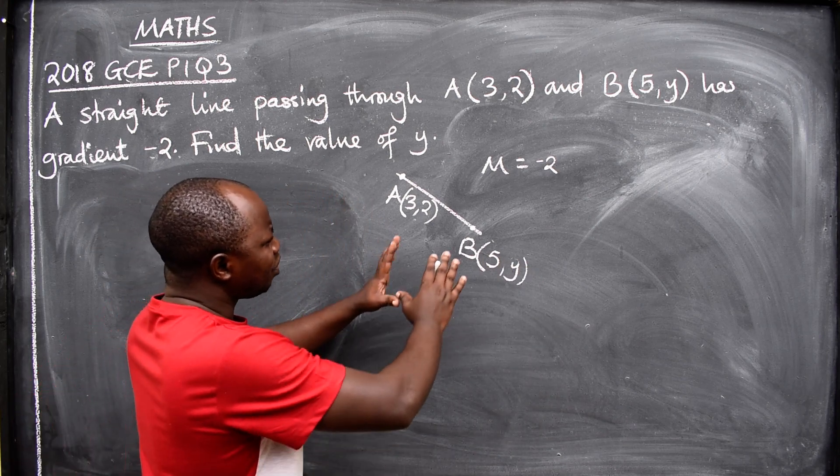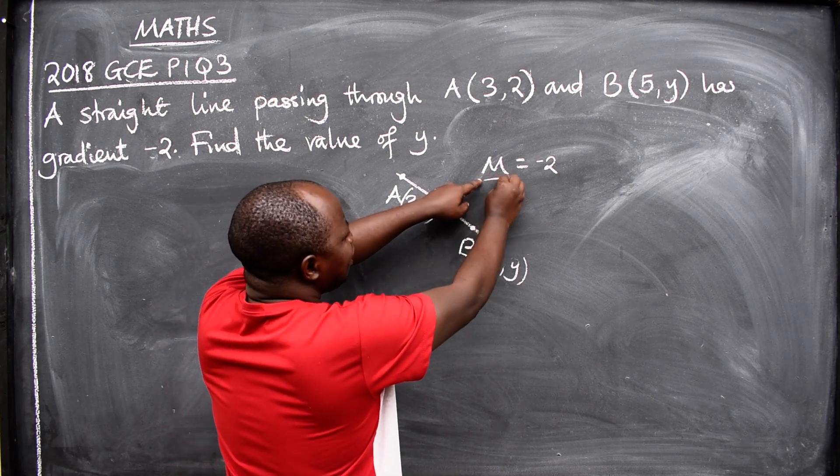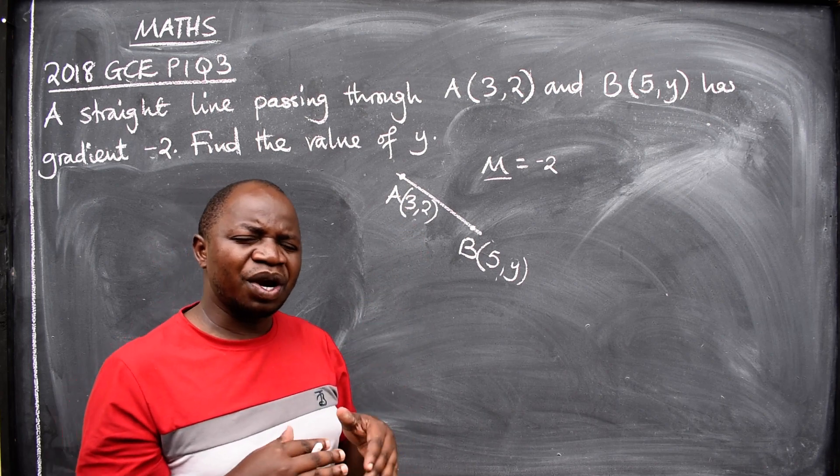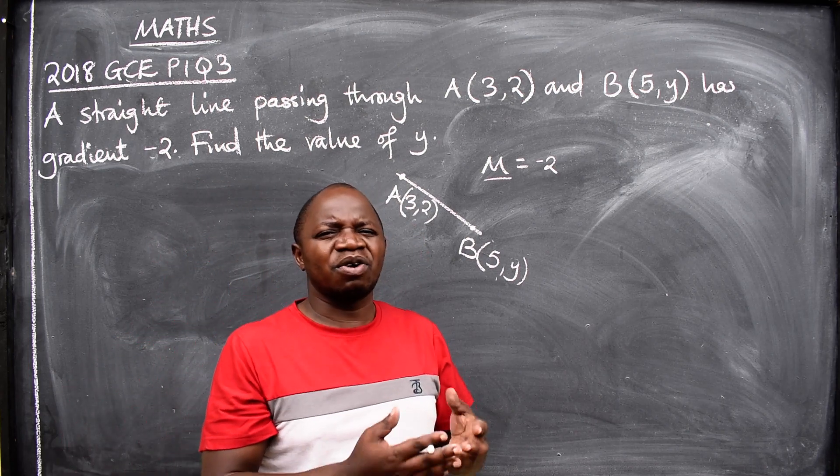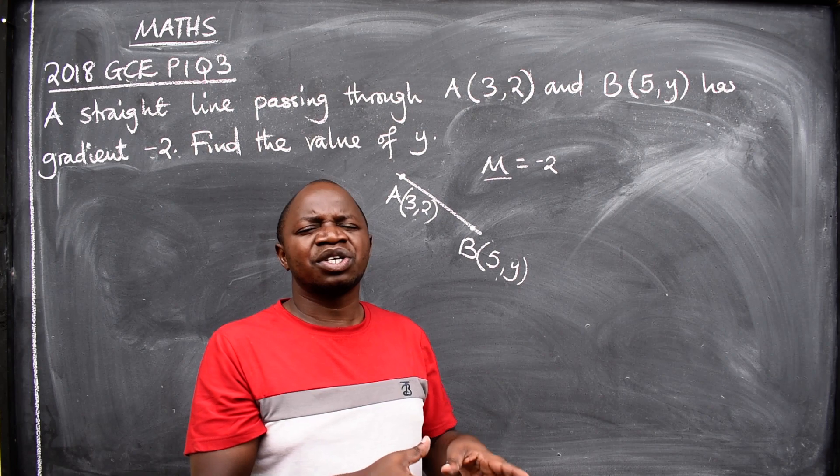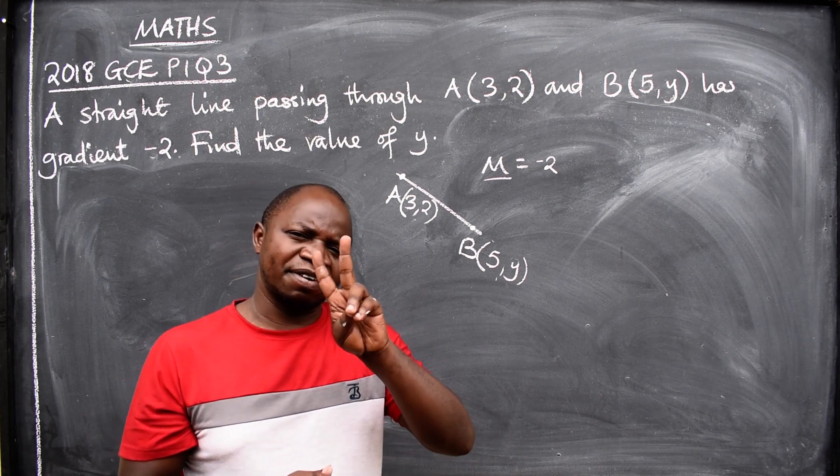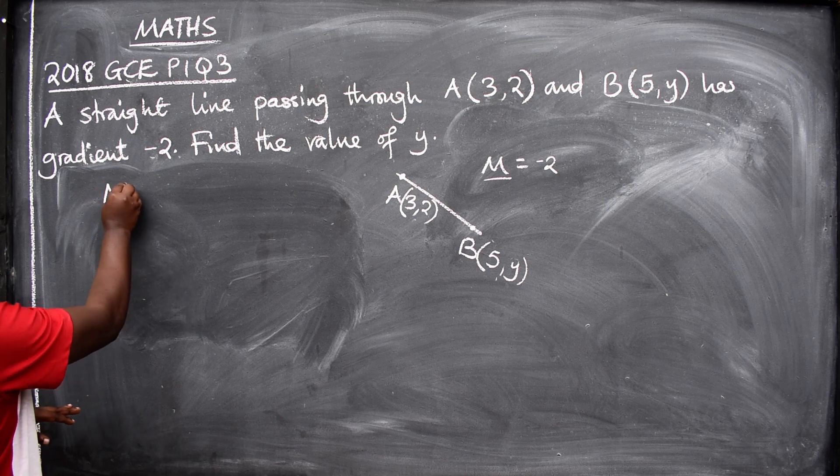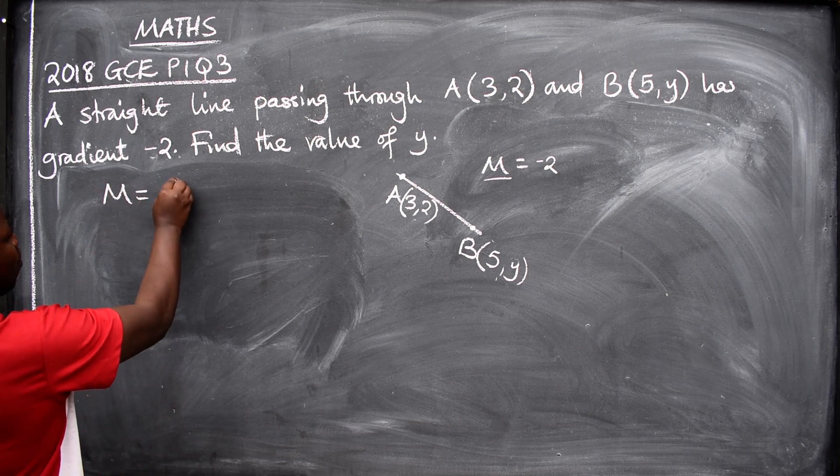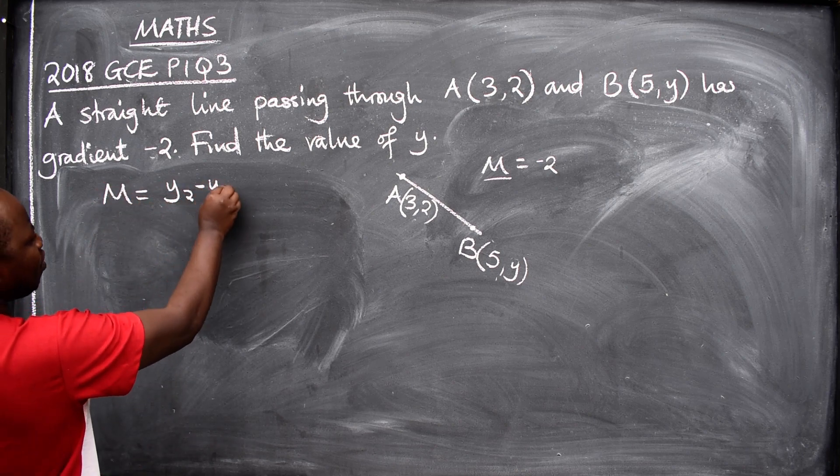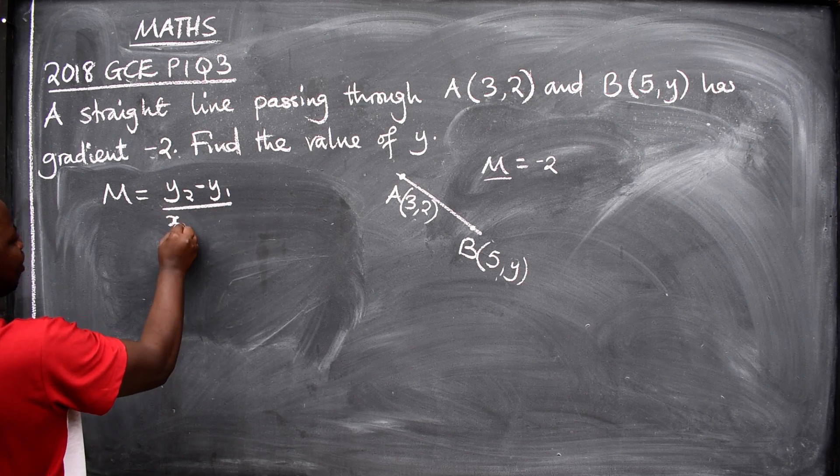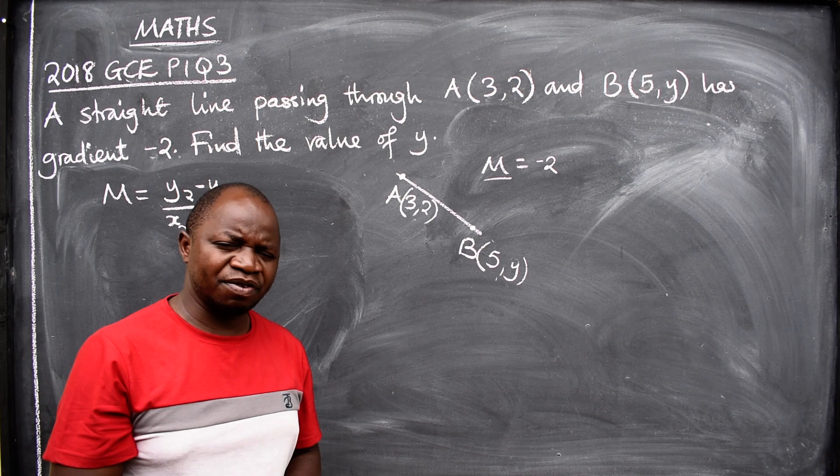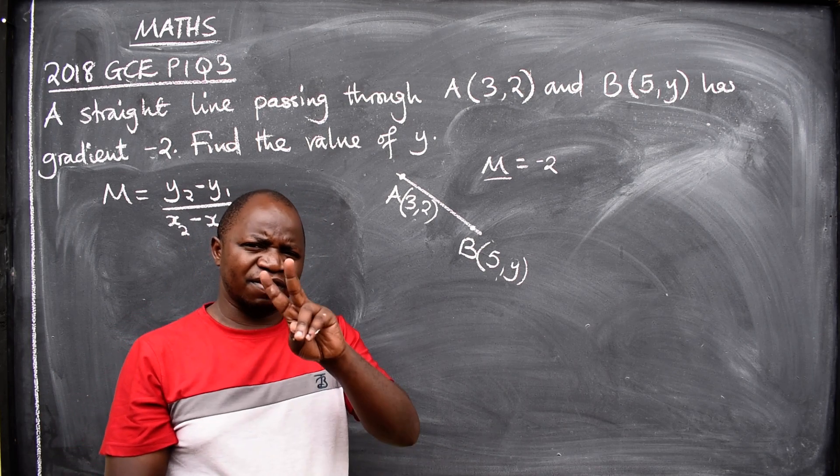Well, since they've mentioned the gradient and you've been given two points, then we are going to apply the formula of the gradient of the line given two points. This is the formula: m = (y2 - y1)/(x2 - x1). That is the formula for the gradient of the line given two points.